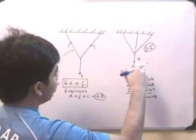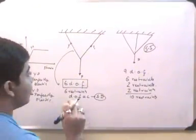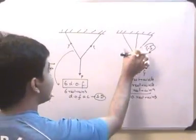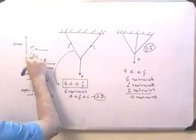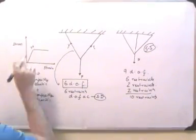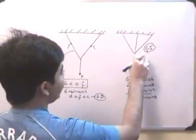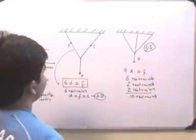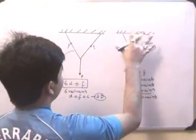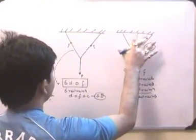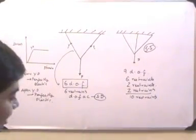The redundant member, once it reaches the yield point, can take more load and enter the plastic zone, while the two inclined bars take more load and still remain in the elastic zone. When the two inclined bars finally have their stress equal to the yield point, we get P_ultimate for this three-bar structure. Essentially, P_ultimate for the three-bar structure is greater than for the two-bar structure.